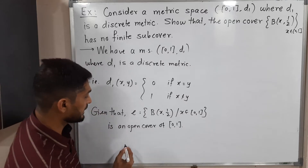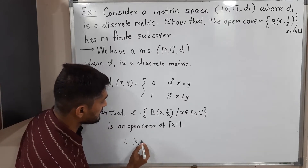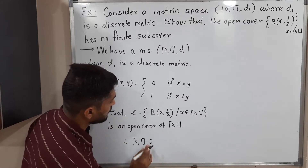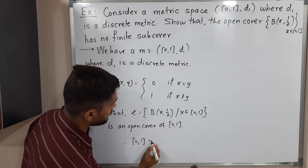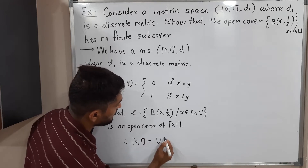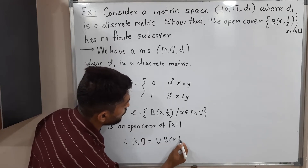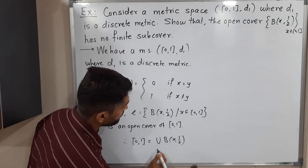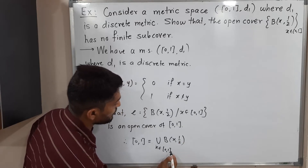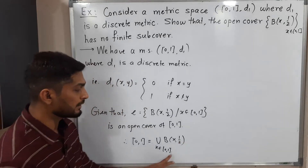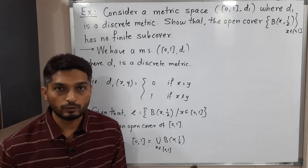Since it is an open cover, we can write: the closed interval [0,1] is a subset of the union of B(x, 1/2) for x belonging to the closed interval [0,1].